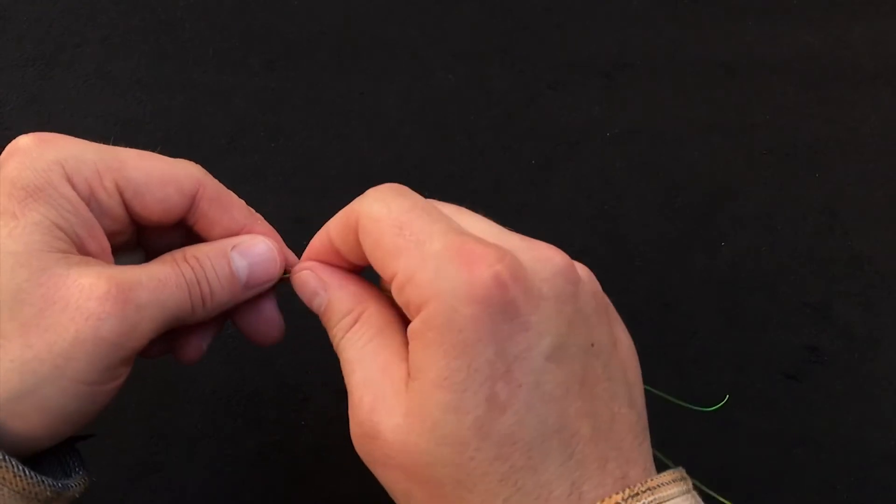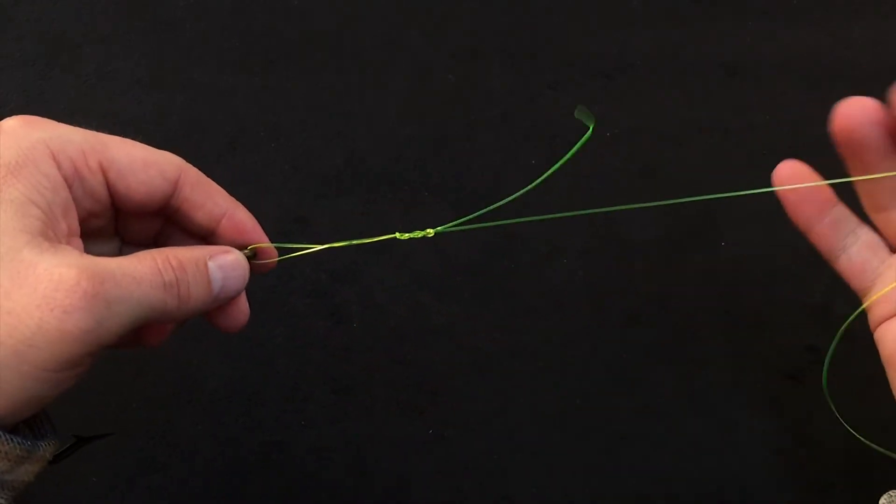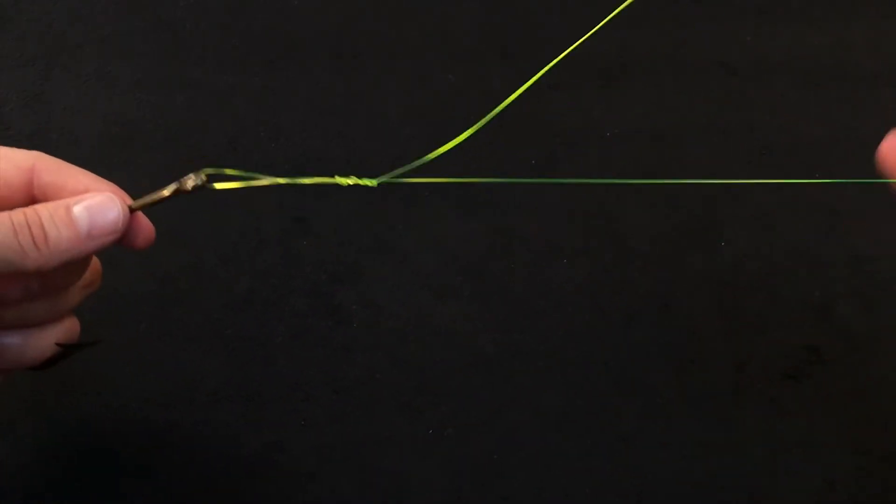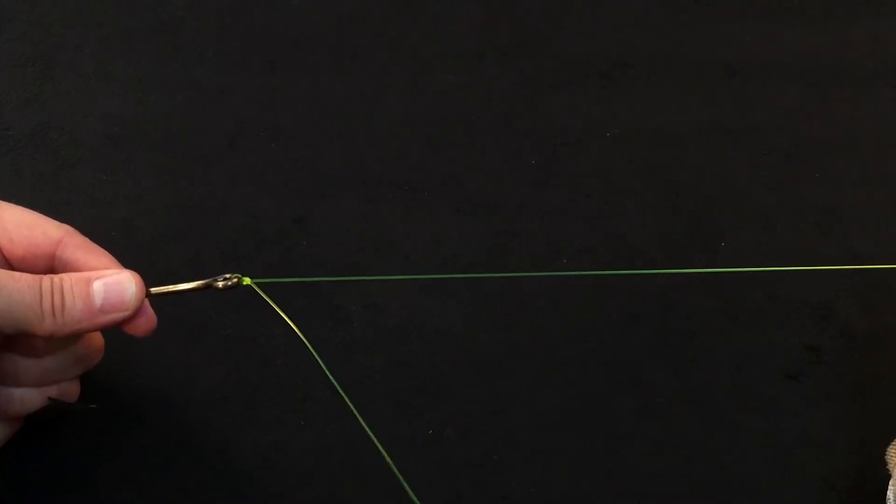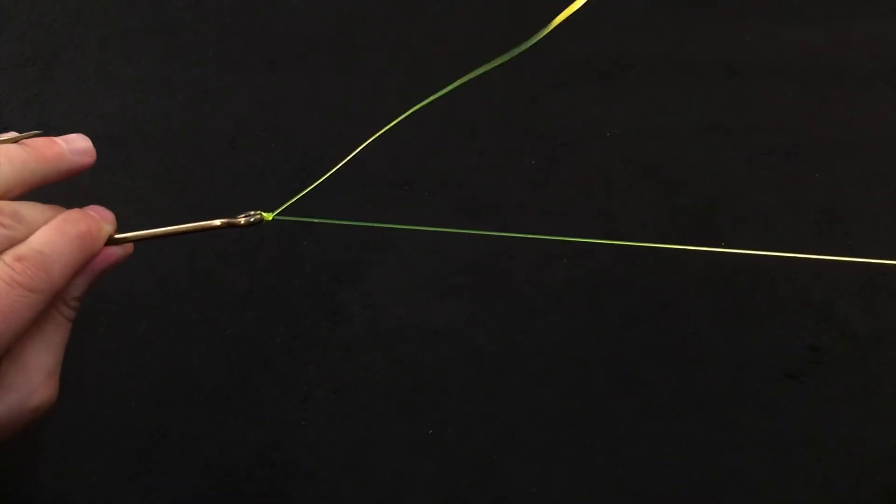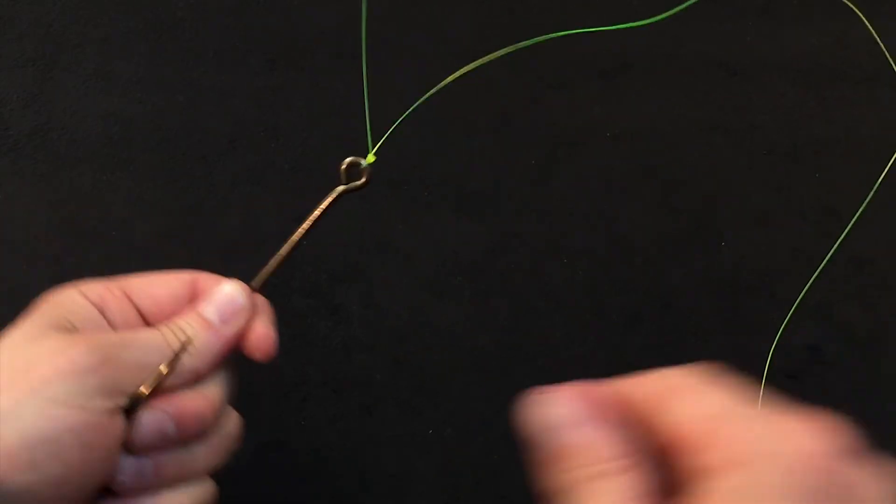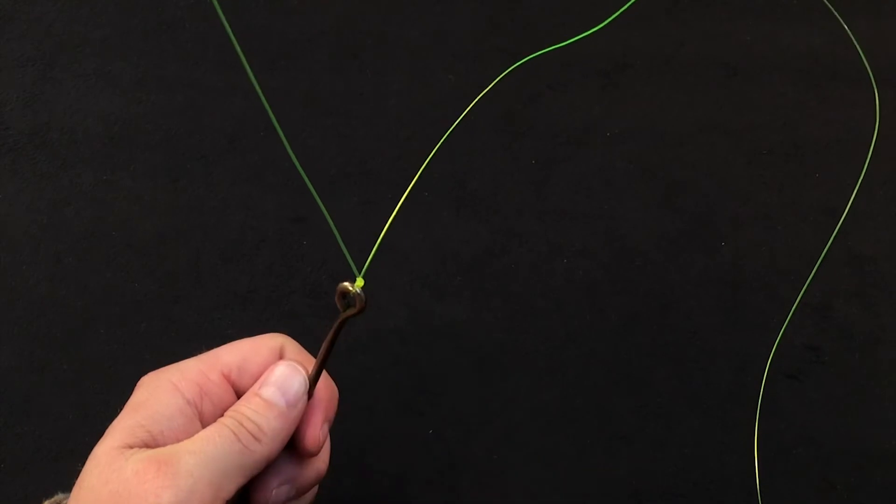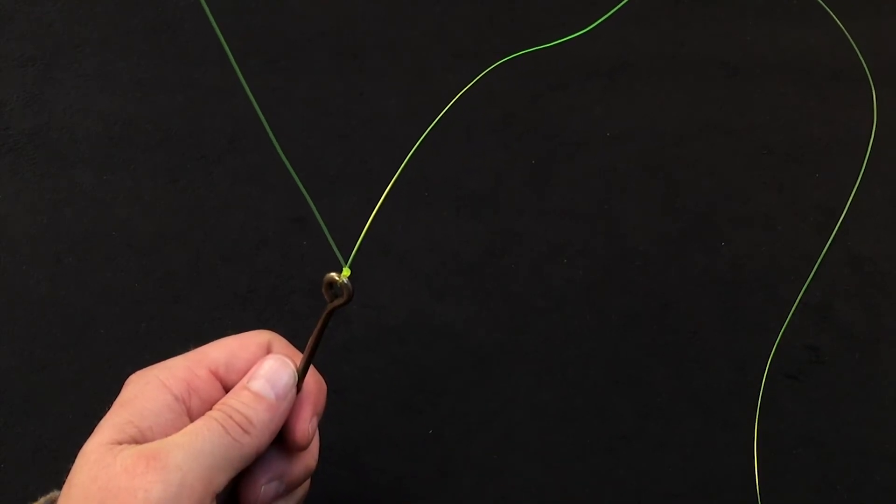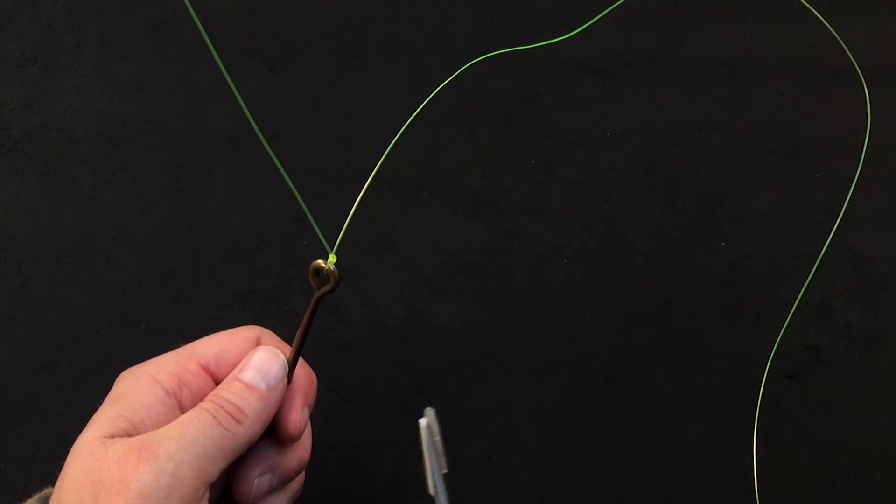Then I take and lubricate the main line with some saliva all the way down to the knot. Take and get a good hold of your leader line, draw that all the way tight and you'll know that knot's seated when you've got a very nice distinct V. And on smaller tippet material you're going to have a little audible pop when that knot seats into position.